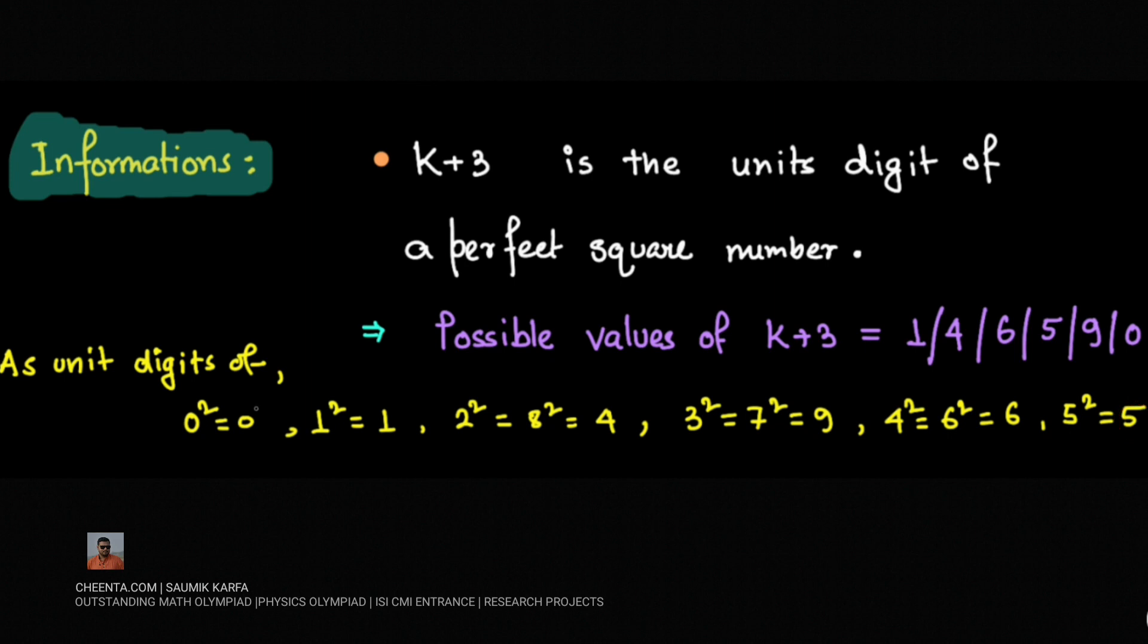So for a perfect square number, the unit digits are only these numbers. These are the possible unit digits of a perfect square number.